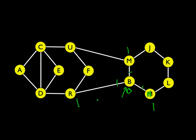Now we take the nodes at distance one and look at their neighbors. That means L is two away, J is two away, that other J is two away, and U is two away. From the one-away R, we get a couple more nodes that are two away. Now we have all the two-away nodes identified.